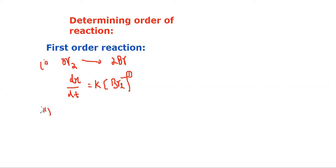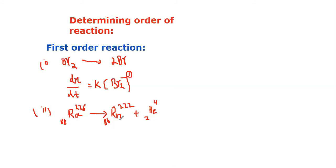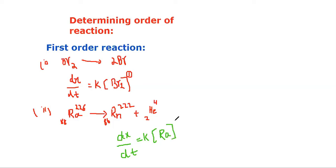Coming to the second example: radium is showing radioactivity. It gives out an alpha particle (helium particle) and is converted into radon. The rate of this reaction is dx/dt = K times concentration of radium, raised to the power one — because there is only one mole of radium. So this is a first order reaction. Third example: nitrogen pentoxide decomposes to give nitric oxide and oxygen gas. Its rate = K times concentration of N2O5, raised to the power one. This is also a first order reaction.